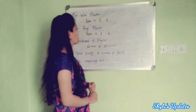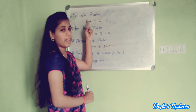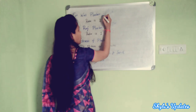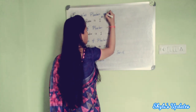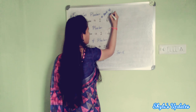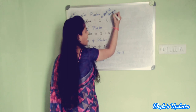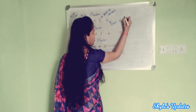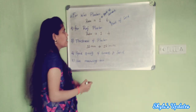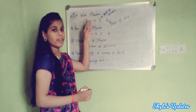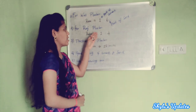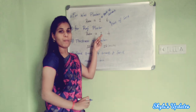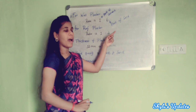The first point is: for wall plaster, the ratio is 1 to 6, where 1 denotes the part of cement and 6 denotes the part of sand. The second point is: for roof plaster, the ratio is 1 to 4, where 1 denotes part of cement and 4 denotes part of sand.